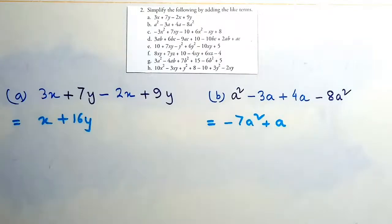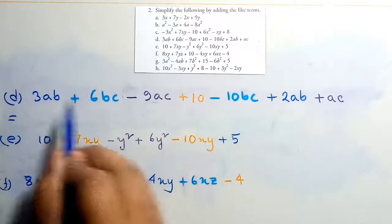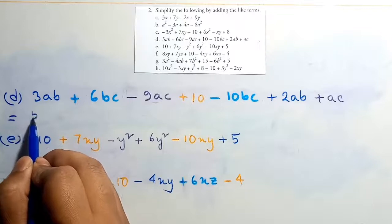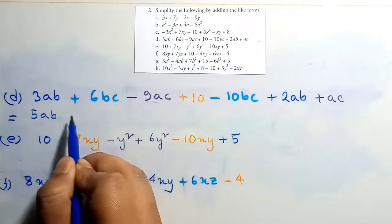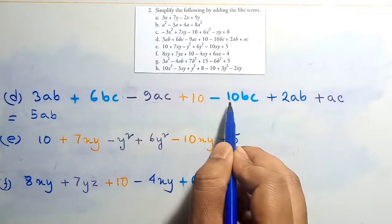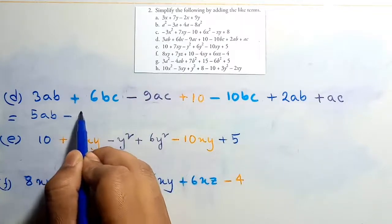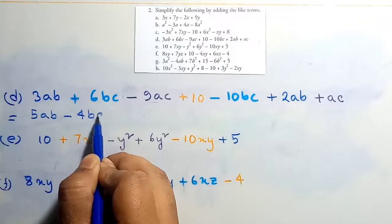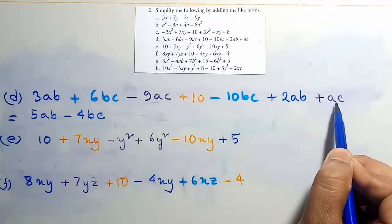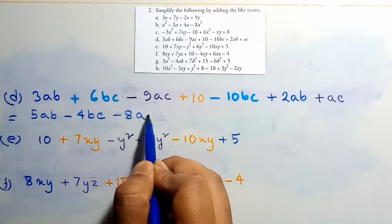Equation D: 3ab plus 2ab gives 5ab. Then 6bc minus 10bc gives minus 4bc. And minus 9ac plus ac gives minus 8ac.